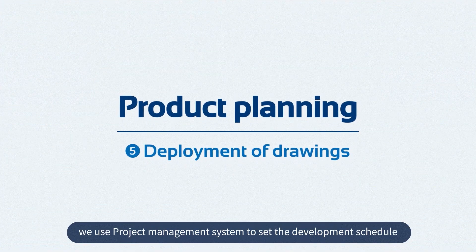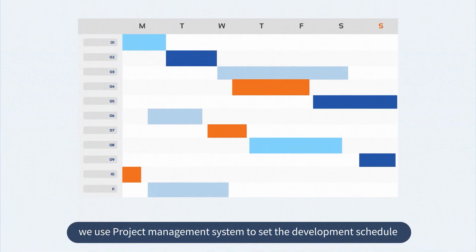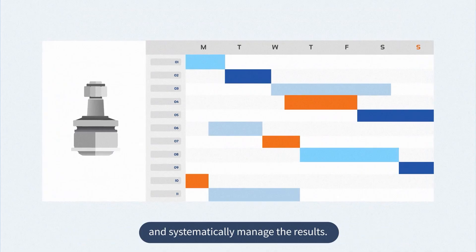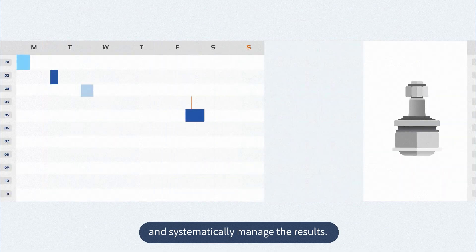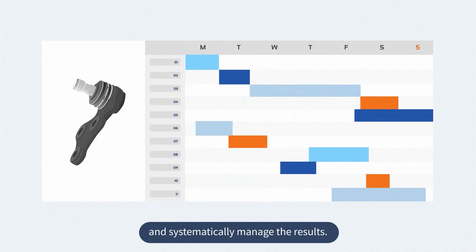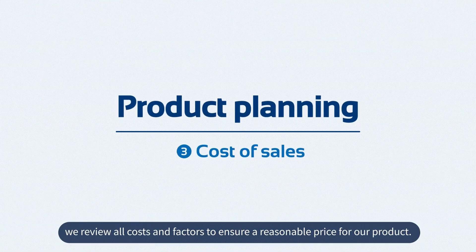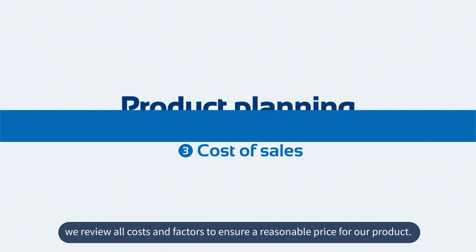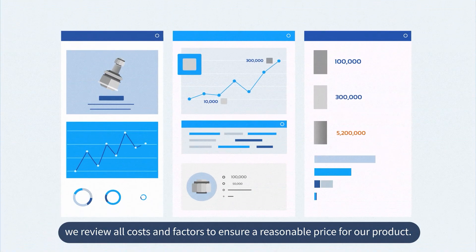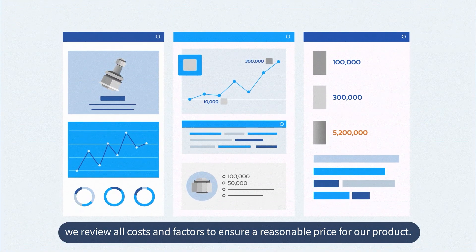Once the schematic diagram is done, we use a project management system to set the development schedule and systematically manage the results. After the planning stage, we review all costs and factors to ensure a reasonable price for our product.